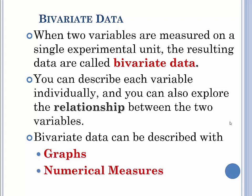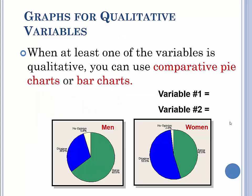The types of graphs we use would be scatter plots. Numerical measures would be correlation and regression. When at least one of the variables is qualitative, you can use a comparative pie chart or bar chart.